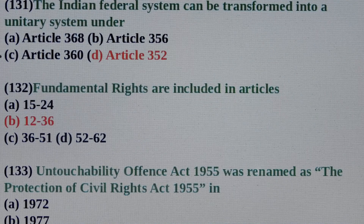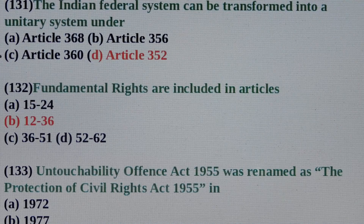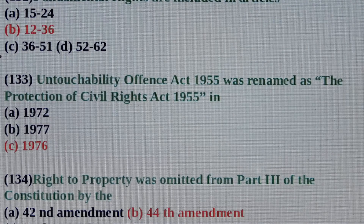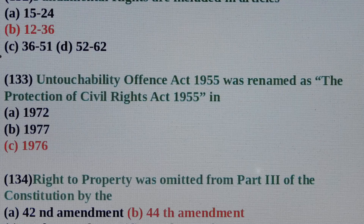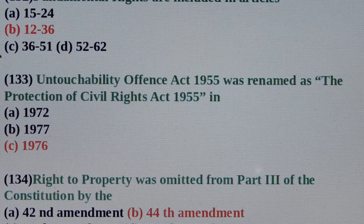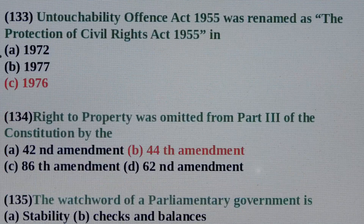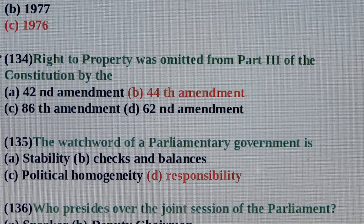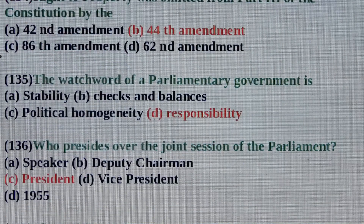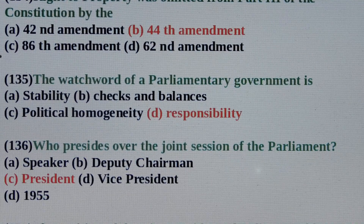Question No. 132: Fundamental rights are included in Articles? Answer is Option B: Article 12 to Article 36. Question No. 133: Untouchability Offense Act 1955 was renamed as the Protection of Civil Rights Act 1955 in? Answer is Option C: 1976. Question No. 134: Right to property was omitted from Part 3rd of the Constitution by? Answer is Option B: 44th Amendment. Question No. 135: The watchword of Parliamentary Government is? Answer is Option D: Responsibility.